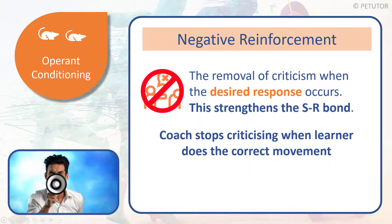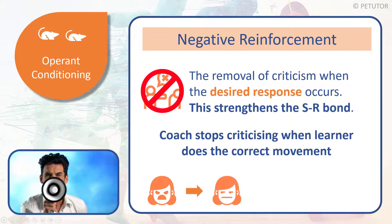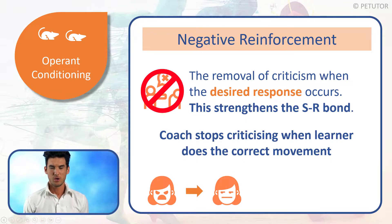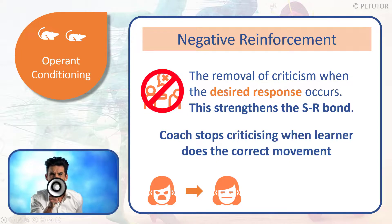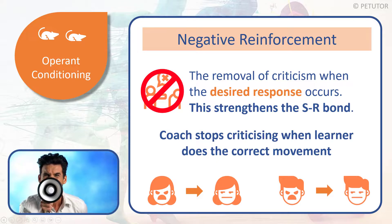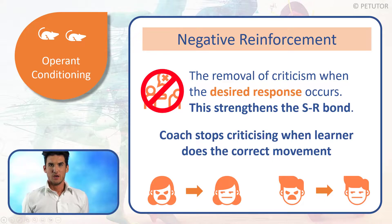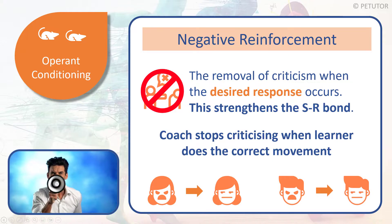You can see the coach stops criticising when the learner does the correct movement — a bellowing coach becomes a neutral coach. It's not necessarily giving praise like 'well done' or a thumbs up; it's simply removing the negative criticism. To recap: negative reinforcement is the removal of criticism when the desired response occurs, and it serves to strengthen the S-R bond.